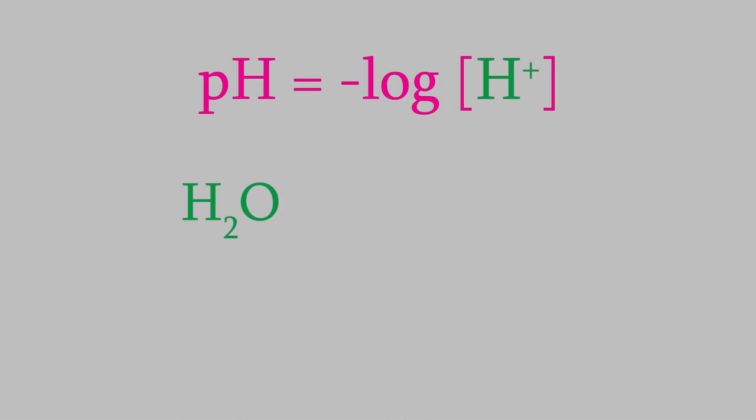It turns out that in any sample of water, a tiny, tiny fraction of water molecules dissociates to form hydrogen and hydroxide ions, according to this reversible reaction. Notice that the hydrogen and hydroxide are in a 1 to 1 ratio. That means that for every hydrogen that gets formed, a hydroxide is also formed.